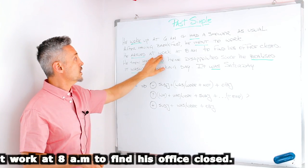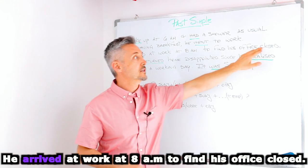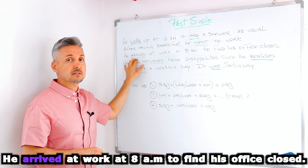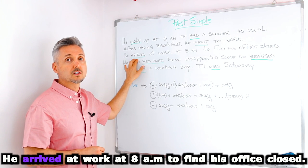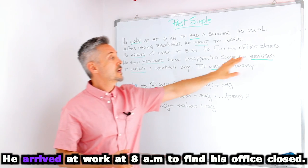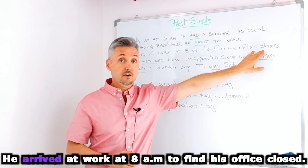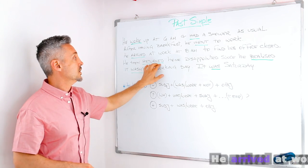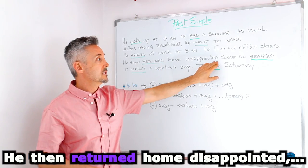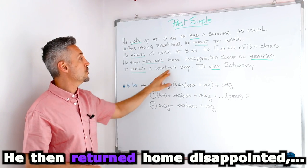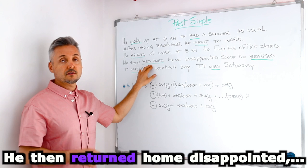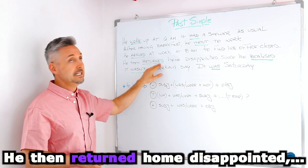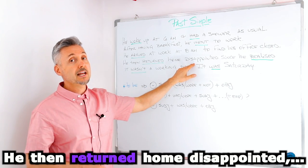He arrived at work at 8 a.m. to find his office closed. So arrived is the past, the regular past of the verb to arrive. And then closed here is an adjective, it's not a verb. He then returned home disappointed, since he realized it wasn't a working day. So here we have the verb to return is irregular. So returned, ed. Disappointed is an adjective.